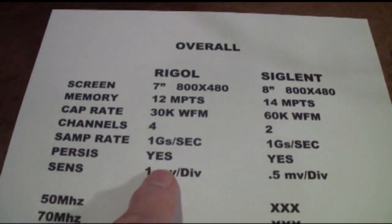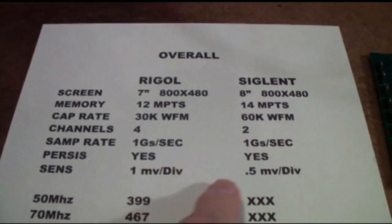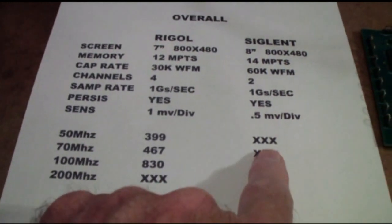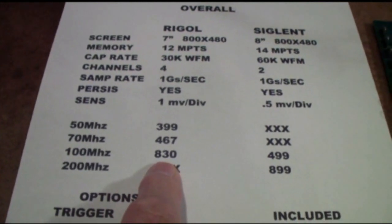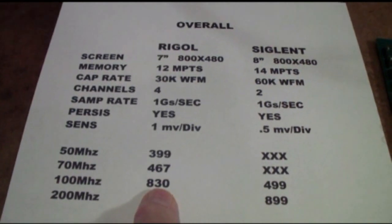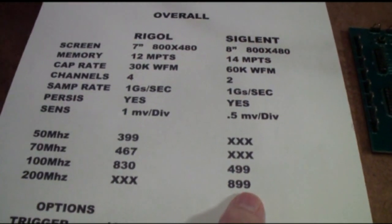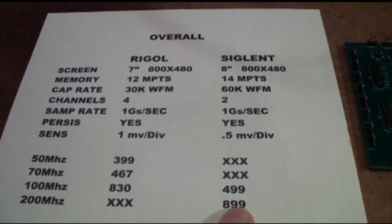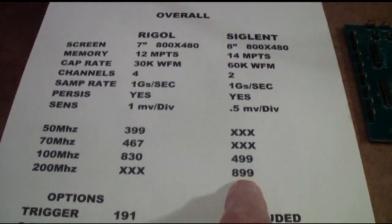The Siglent comes with some options that you have to pay extra for on the Rigol. They both sample at 1 giga-sample per second and both have variable persistence. The Siglent's sensitivity is 500 microvolts per division compared to 1 millivolt per division on the Rigol. Siglent doesn't have a 50 or 70 megahertz version — the first directly comparable model is 100 megahertz at $499, versus the Rigol at $830.